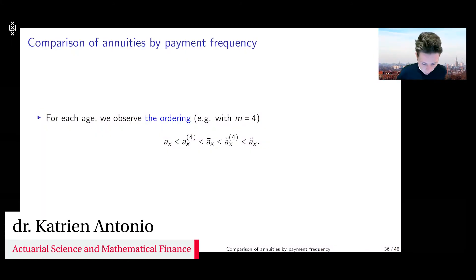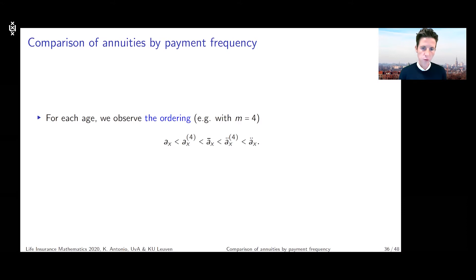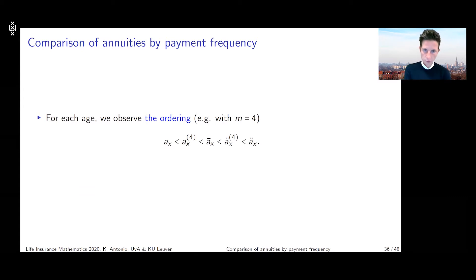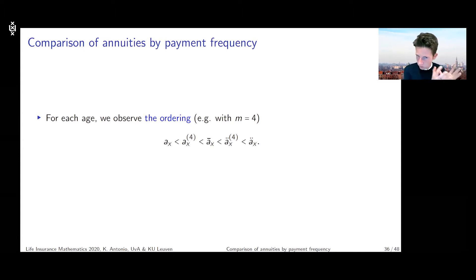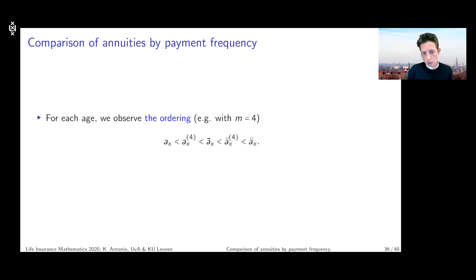Let's continue with some considerations. What if you want to compare these annuities — more specifically the expected present values of these annuities — for different payment frequencies? I wrote a specific ordering down. Let's assume m is equal to 4, which means we split the year into four equal time periods and pay at times 0, 1/4, 1/2, and 3/4. What you can then show is that a specific ordering must hold.